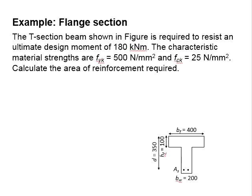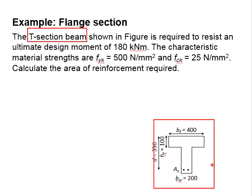Let us try an example to determine the amount of reinforcement bar required within a flange section. A T-section beam shown here is required to resist a design ultimate moment of 180 kNm.